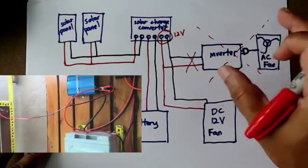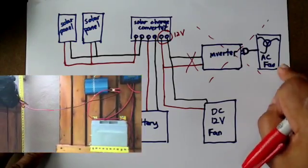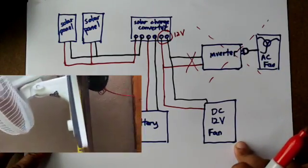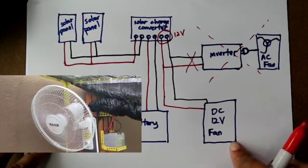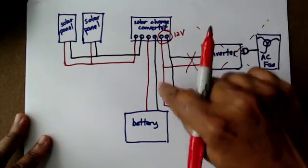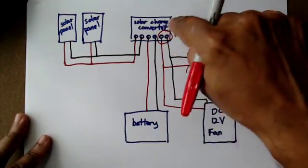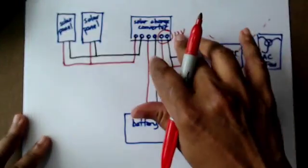You also have the additional cost of this. AC fans are a lot cheaper because it's just simply not common to have a DC fan. And therefore, I guess, economics of scale. This is a bit more expensive. But it is a lot more efficient because 12 volts, the battery is 12 volts.